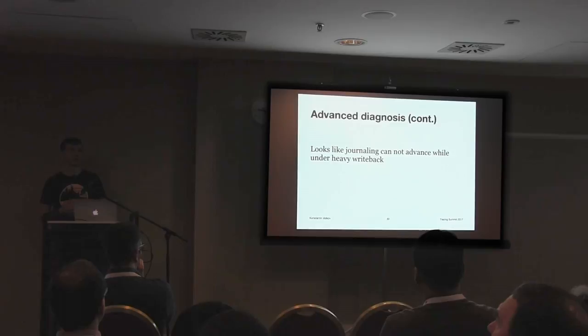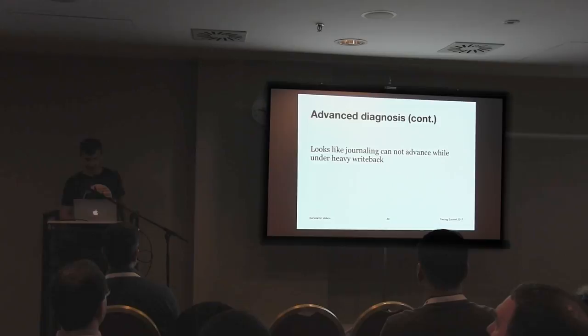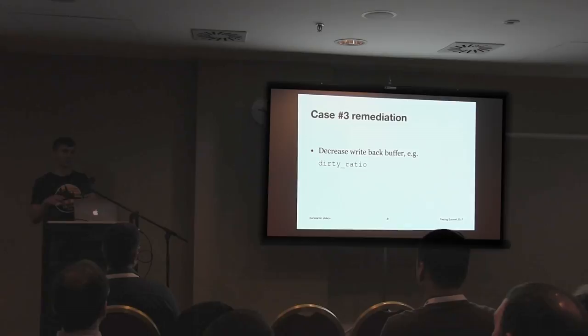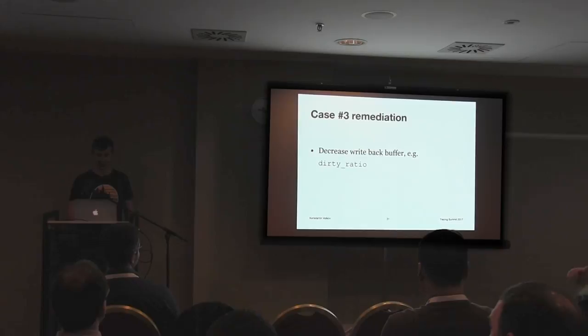I tried to figure out what happened while the process was sleeping. I saw lots of requests from writeback code, because there was another process heavily writing to the disk — it was debug logging of another process generating a lot of writeback requests. I tried to play with the dirty ratio and it helped a little, reducing from 10 seconds to about 1 second. But the open question remains: why can't journaling advance while the system is under heavy writeback?